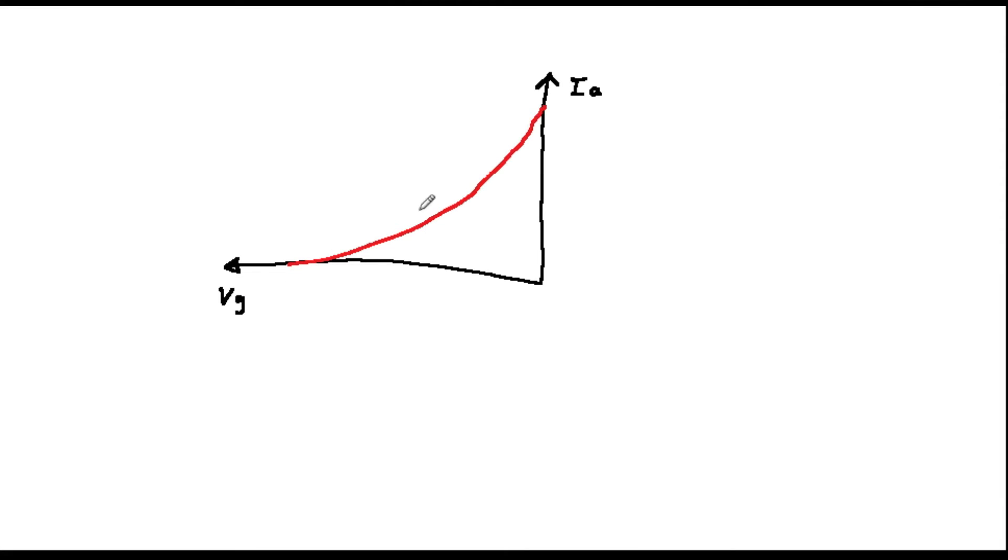If we plot the relationship between grid voltage and anode current, we get a graph which looks rather like the CHFET graph that is shown on the screen now.